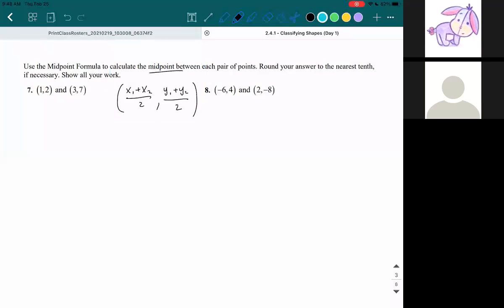So in our first problem, we are given two points, 1, 2, and 3, 7. I shall now label them with x1, y1. So that's your x1 and y1, both part of your first point, which is why they both have a 1 next to it. And then for your second point, x2, y2, both part of your second point, which is why they have 2 next to it.